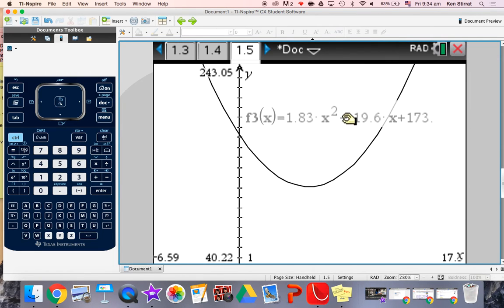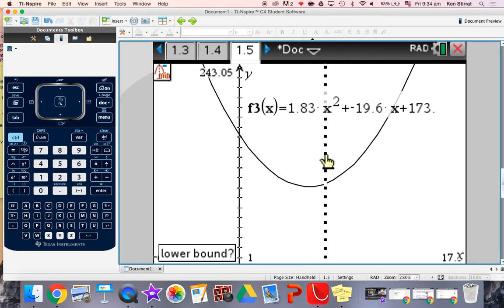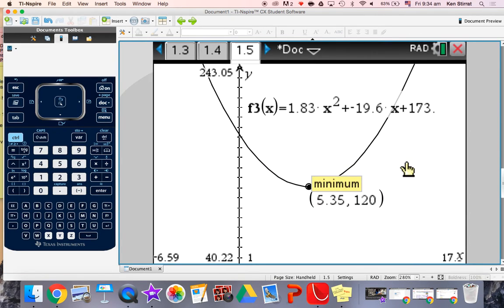So there's the same model but now on the graphical page and now menu. Analyze graph. Minimum. Choose a point before, a point after. So according to our model, the minimum house price was around that time. Give or take a bit, of course, because it is just a model.